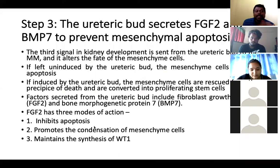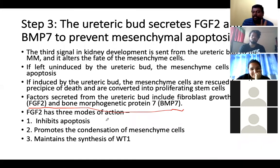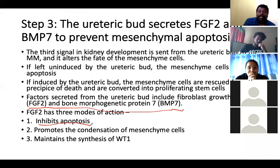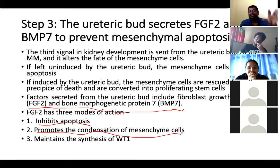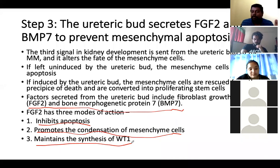The third step comes from the ureteric bud. The ureteric bud produces two proteins: FGF2 and BMP7 — one is fibroblast growth factor, the other is bone morphogenetic protein. BMP7 has three functions: it inhibits apoptosis (because without induction the mesenchymal cells would die), it promotes condensation of the mesenchymal cells so they form a cap to the ureteric bud, and it maintains the synthesis of WT1.